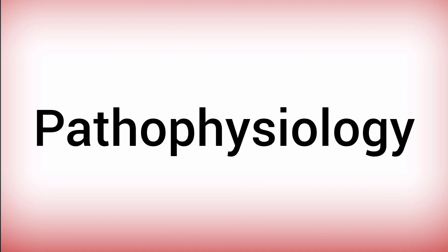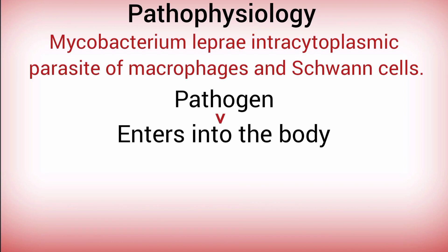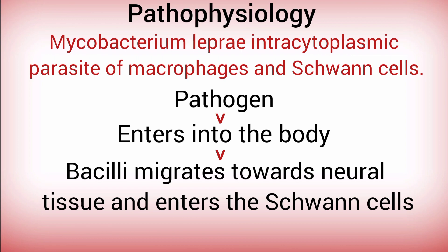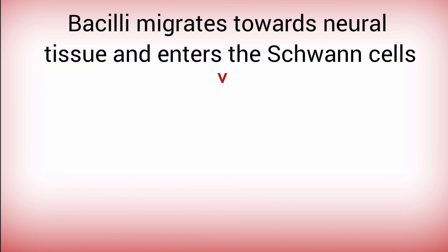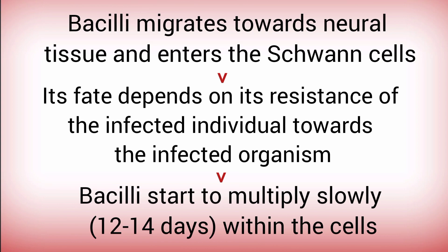Let's talk about pathophysiology. First, Mycobacterium leprae bacteria enter your body and reach your neural tissue. The bacteria enter the Schwann cells in our neurons. If you are a highly immunized individual, no problem — the bacteria will be killed. But if you have low immunity, you will get infected and the bacteria will multiply slowly.